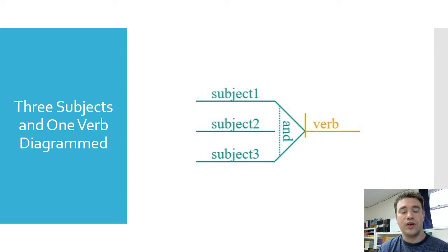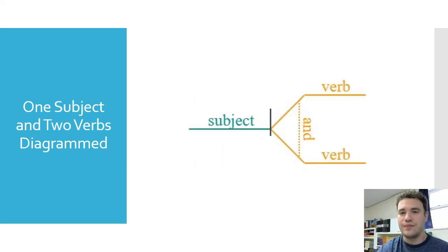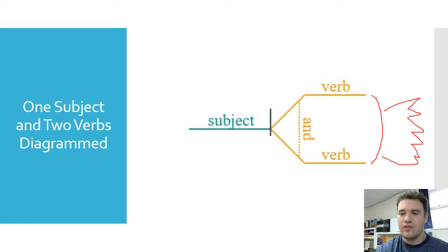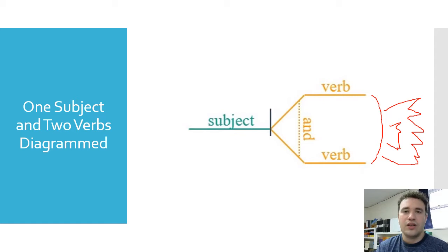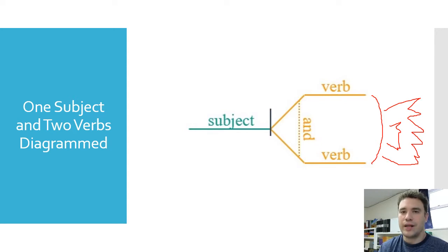Now when you've got a compound verb — more than one verb for the same subject — it's going to look something like this. We're still going to use the rocket ship shape structure, but you've got it on the other side. The subject is on the horizontal line first, then the vertical line, and after the vertical line you've got the rocket ship structure with the first verb, the conjunction on the dotted line, and then the other verb. You'll list these in order: whichever verb comes first goes on top, whichever comes second goes on the bottom.